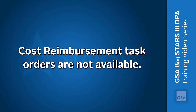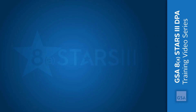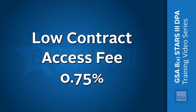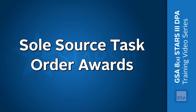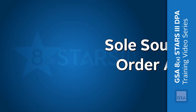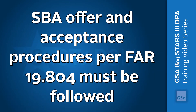Cost reimbursement task orders are not available. 8A STARS III has the same contract access fee as GSA schedules, a low 0.75%. And 8A STARS III allows sole source task order awards for orders at or below the 8A program competitive threshold, including options. SBA offer and acceptance procedures per FAR 19.804 must be followed when issuing sole source task orders.